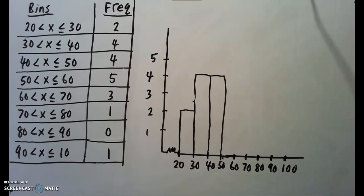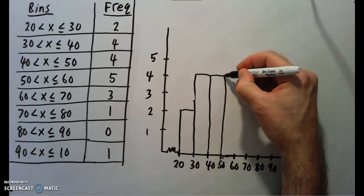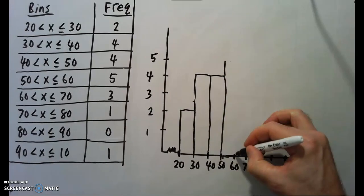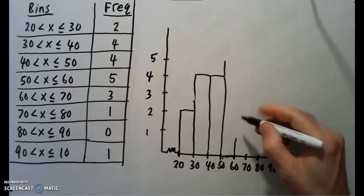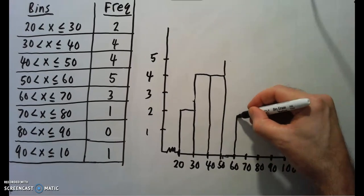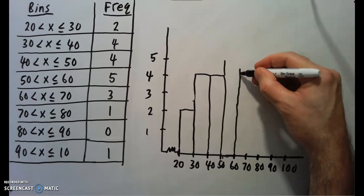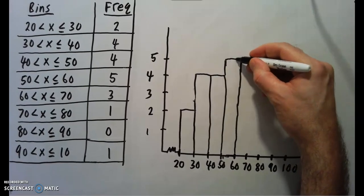Next one has frequency 5. So that's the biggest one. The tallest one. It has the most number of numbers in there from our vector.